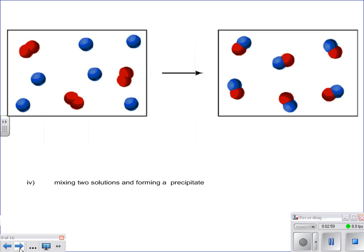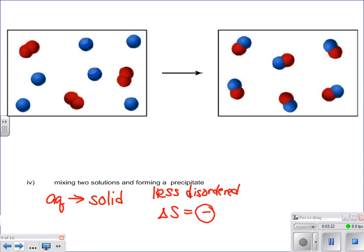And then the last little example on this one is going to be mixing two solutions and forming a precipitate. So you have two solutions and you end up getting a solid out of them. So you've got more order, or less disordered. So therefore, your delta S is a negative value.